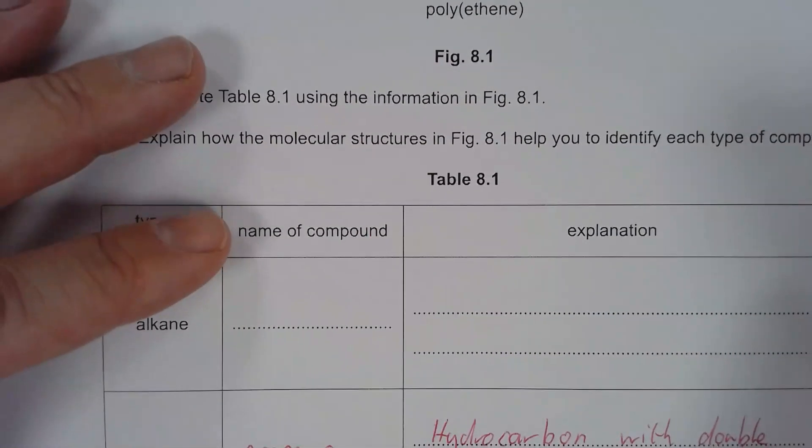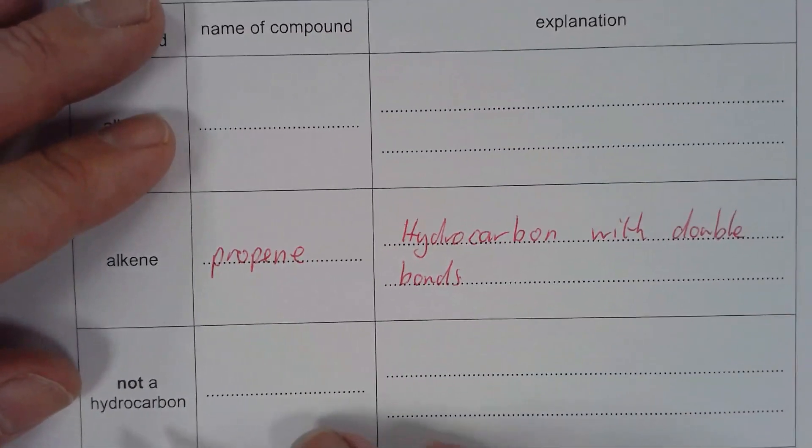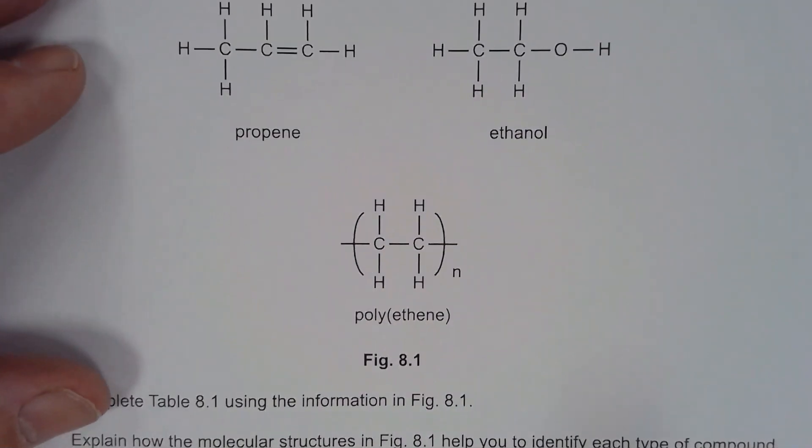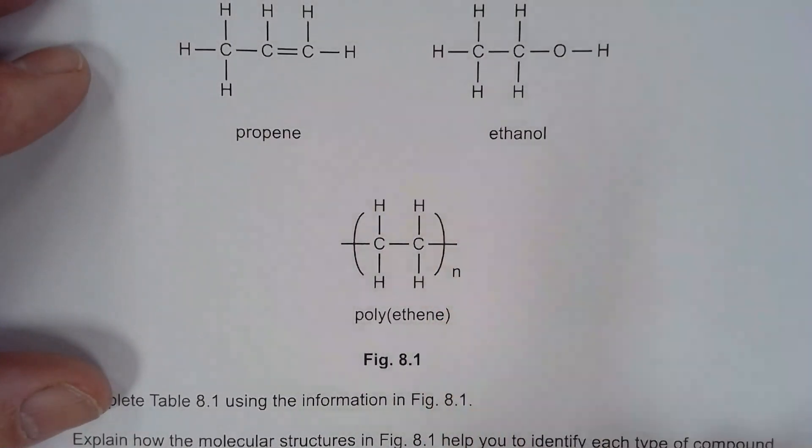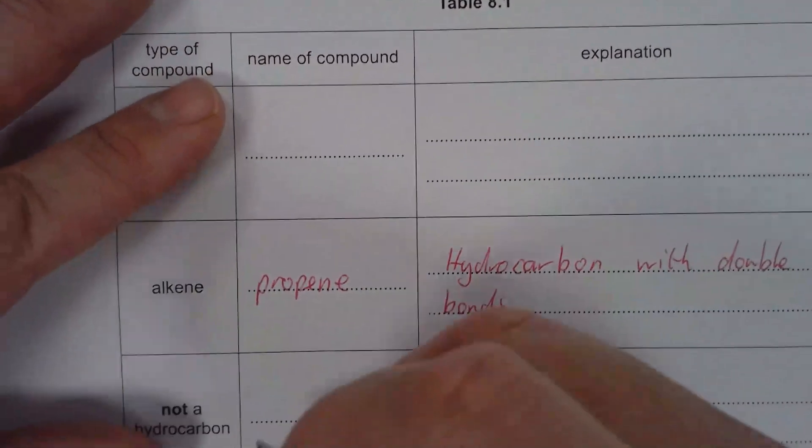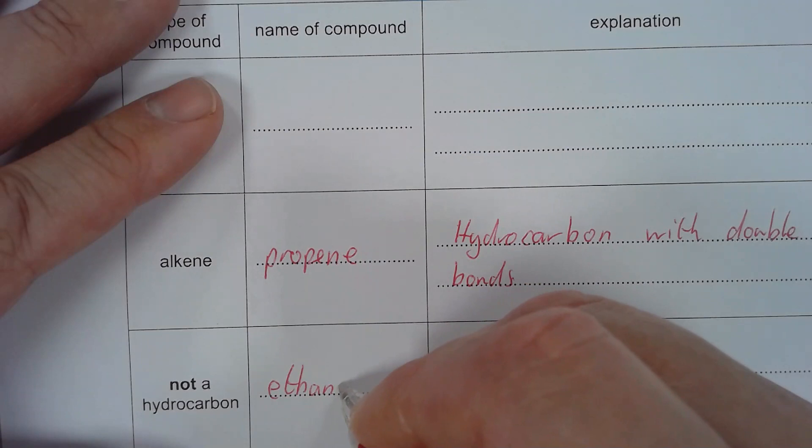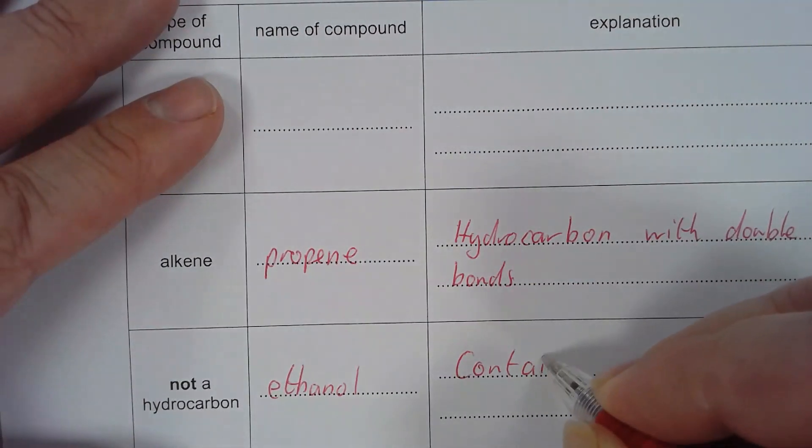If something's not a hydrocarbon, then it contains substances other than hydrogen and carbon. So if we look at our compounds here, the obvious one that stands out is the ethanol. The ethanol is not a hydrocarbon, and the way we know that is it contains oxygen.